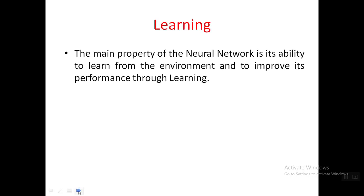The key property of the neural network is its ability to learn from the environment and to improve its performance through learning. This is the main property of a neural network. Learning is the ultimate point — we need to make the neural network learn from and adapt based on the environment.